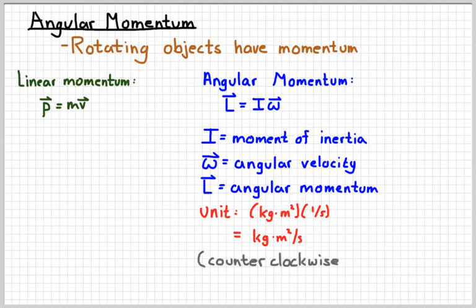Just like all of our other angular quantities, counterclockwise is defined to be positive for angular momentum. So if something's rotating clockwise, we need to give it a negative angular momentum.